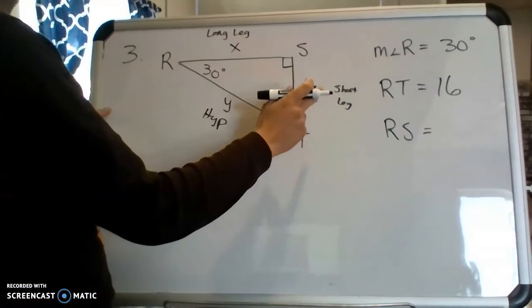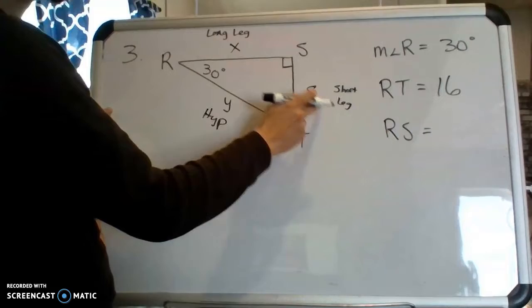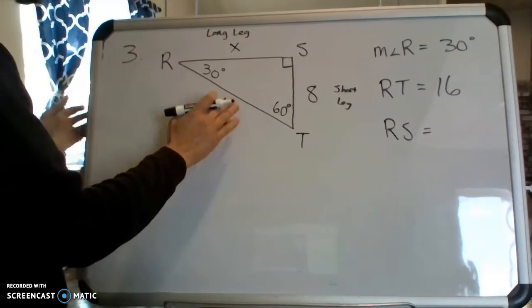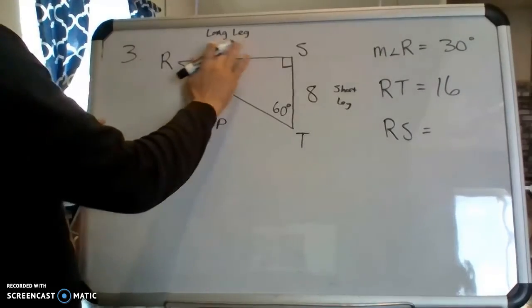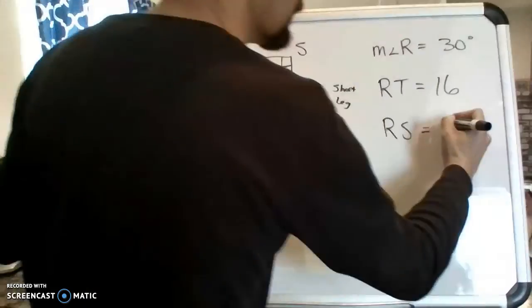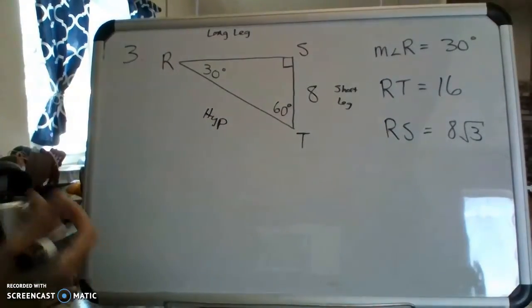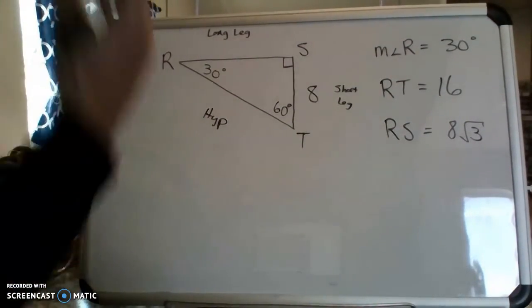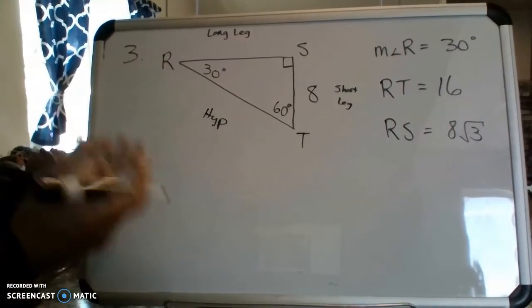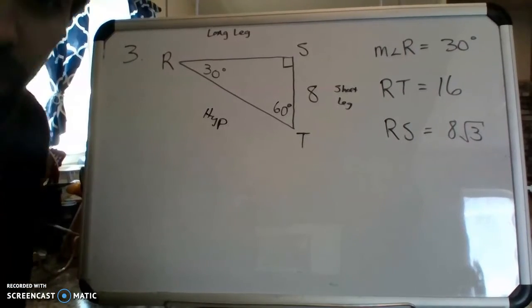We also learned in class that the short leg has a relationship with the long leg. The short leg multiplied by the square root of 3 will give you the long leg. So actually, I didn't even need these variables because it's so easy to calculate. 8 times the square root of 3 will be the long leg. So RS would be 8 times the square root of 3. And that's it. There's no other calculations we have to do. We don't have to get decimal approximations for these. We're done. That's it.